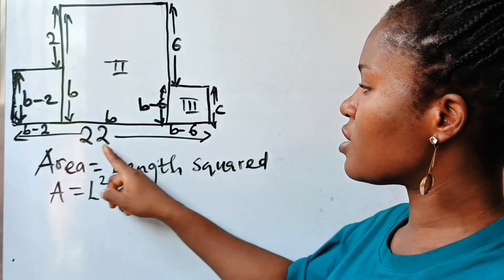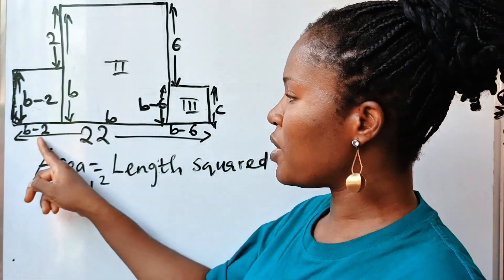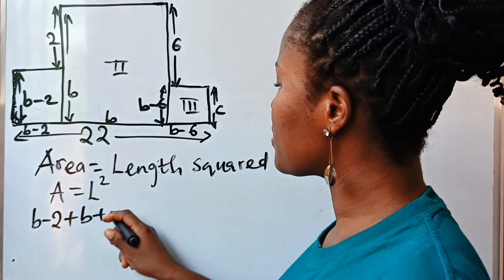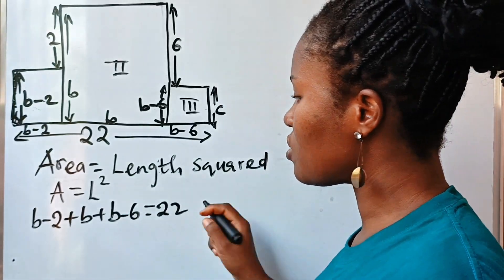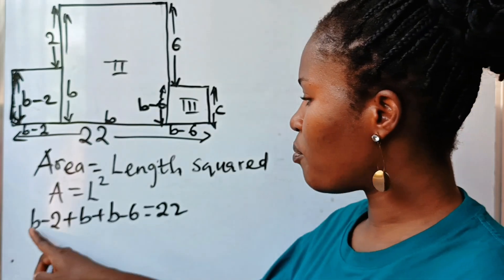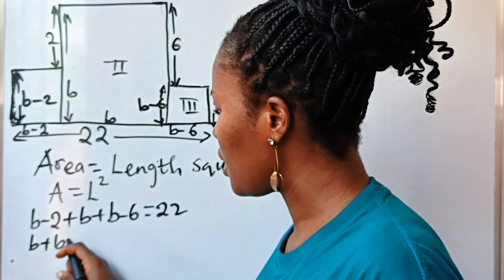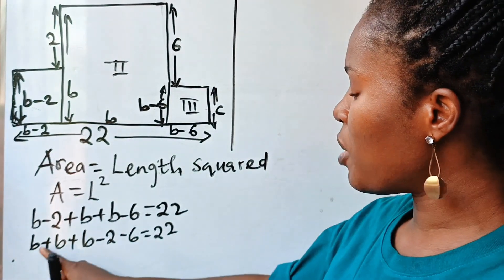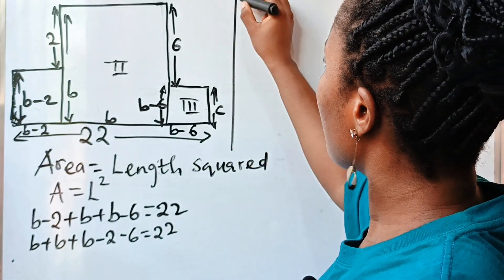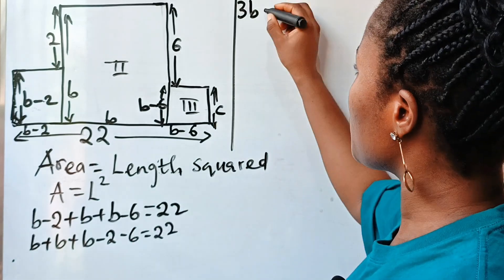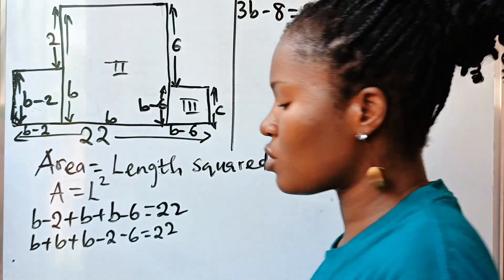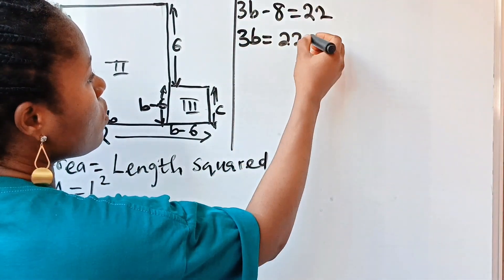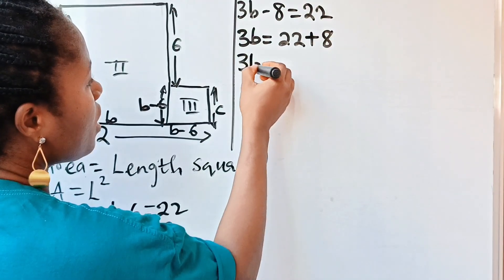Now, if from here to here is 22, it means that B minus 2, plus B minus 2, plus B, plus B, plus B minus 6, plus B minus 6 equals 22. Collecting like terms: B plus B plus B gives us 3B, then minus 2 minus 6 gives us minus 8, equals 22. So 3B minus 8 equals 22, which means 3B equals 30.